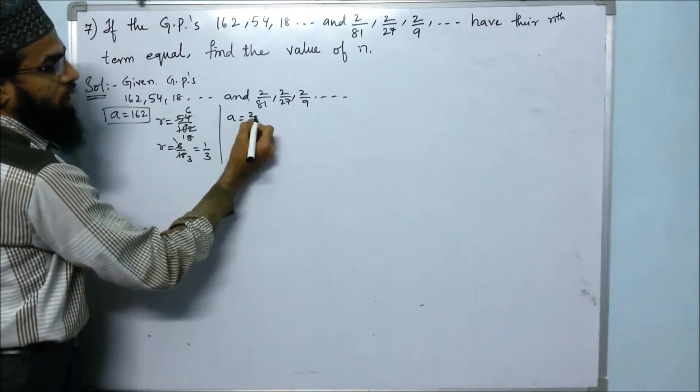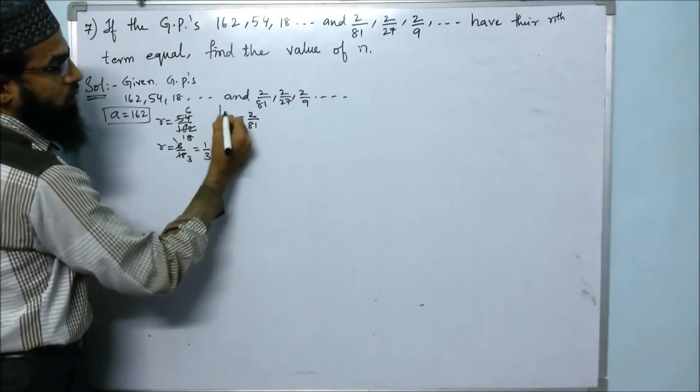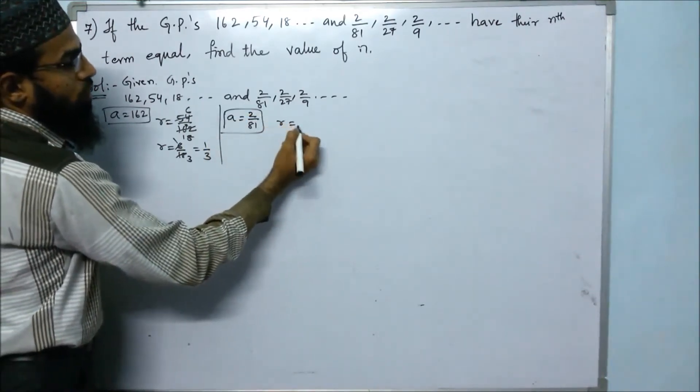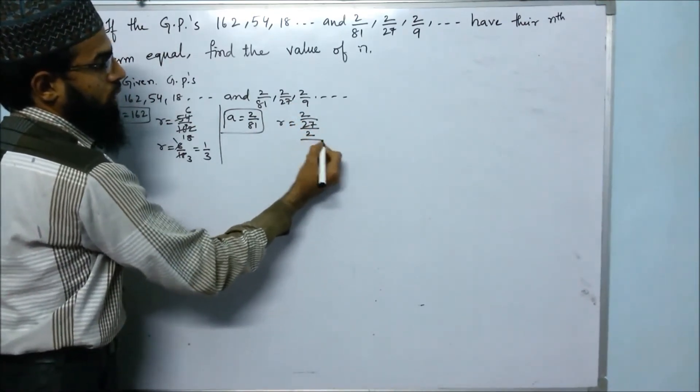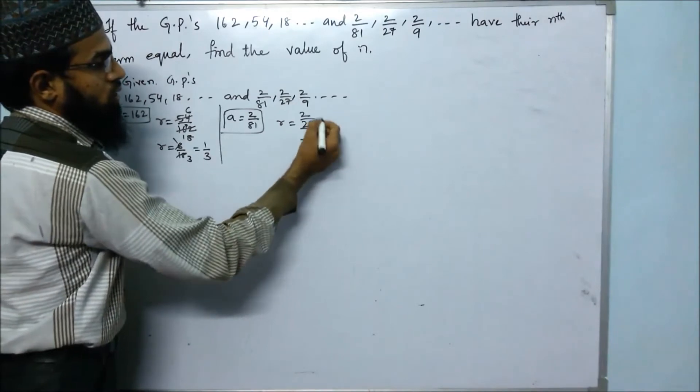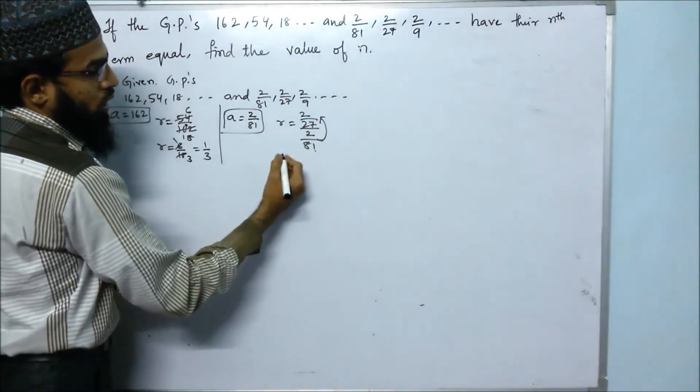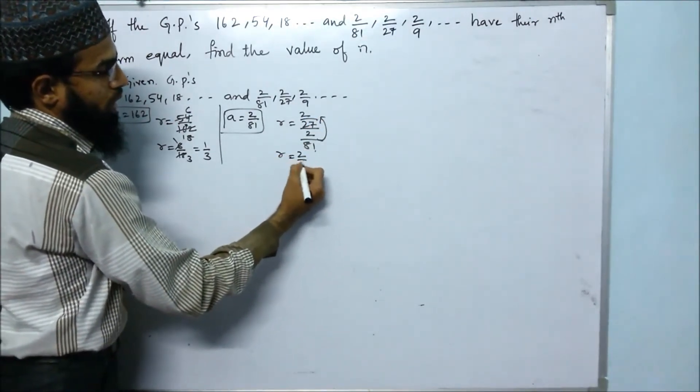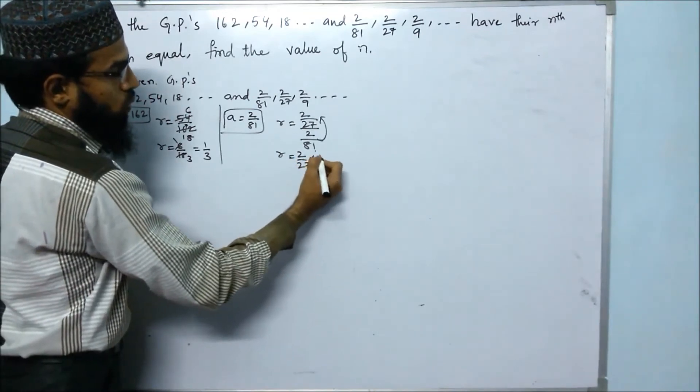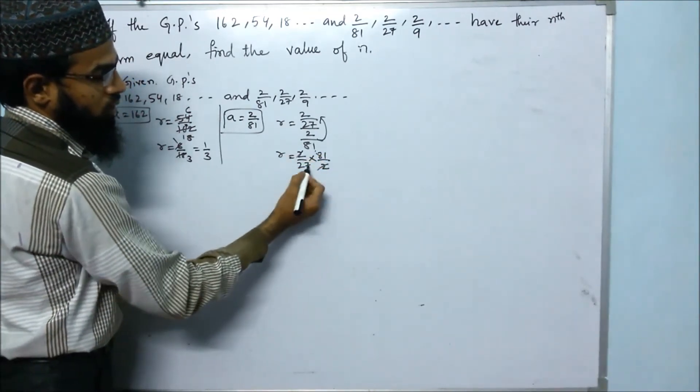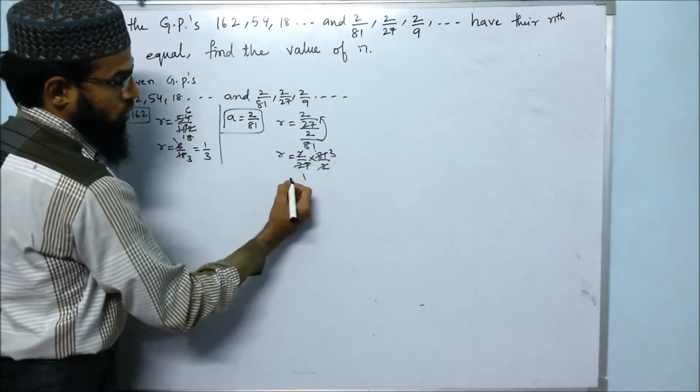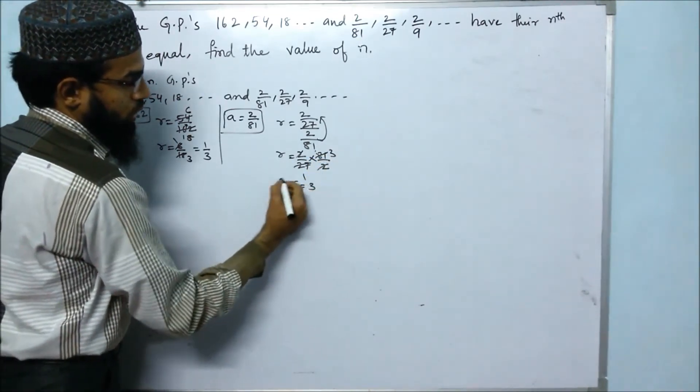For the second GP, A = 2/81 and the common ratio is A2/A1, which is (2/27) divided by (2/81). This becomes (2/27) times (81/2). Simplifying: 81/27 = 3. So R = 3.